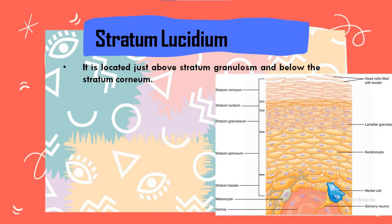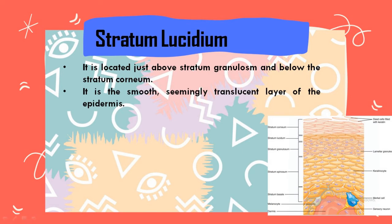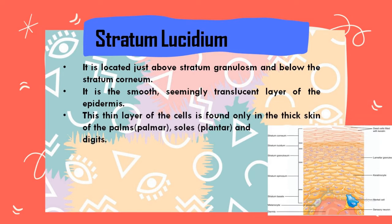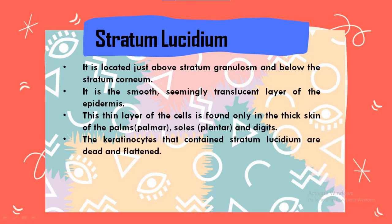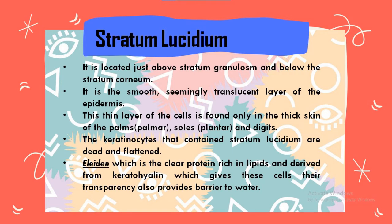The stratum lucidum is located just above the stratum granulosum and below the stratum corneum. It is the smooth, seemingly translucent layer of the epidermis. This thin layer of cells is found only in the thick skin of the palms, soles, and digits. The keratinocytes that make up the stratum lucidum are dead and flattened. Eleidin, a clear protein rich in lipids derived from keratohyalin, gives these cells their transparency and also provides a barrier to water.